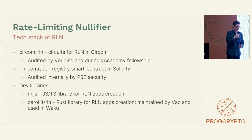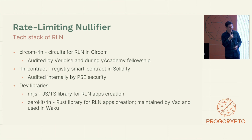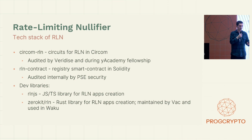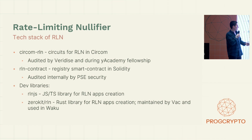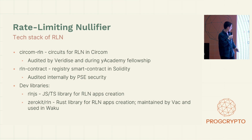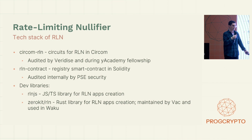The tech stack of RLN includes Circom RLN — the circuit for RLN written in Circom. We have the RLN contract, a registry smart contract in Solidity. It helps users register in the system with a stake, and if someone spams, anyone can slash and take that user's stake. We also have developer libraries: RLNJS, a JavaScript/TypeScript library for RLN app creation, and ZeroKit RLN, a Rust library maintained by VAC and used in Waku.